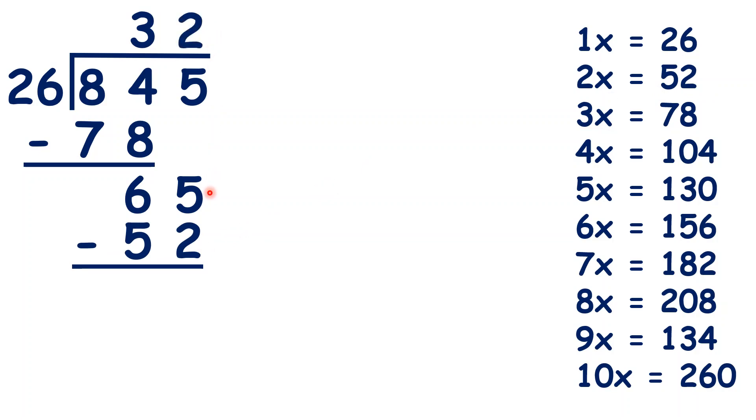But now, 65 minus 52 is 13, but we don't have anything else to bring down. But we can extend our dividend with a point 0, copy the decimal point up into our answer, and bring down the 0. So now, we can see that 130 divided by 26 is exactly 5, so we can write 5 in our answer, and then because we don't have anything left to divide, our answer is 32.5.